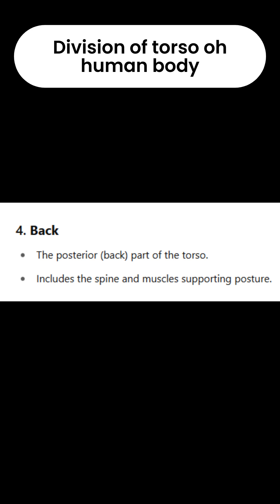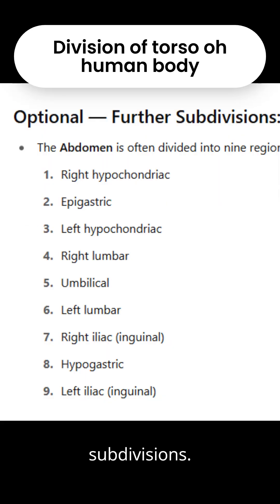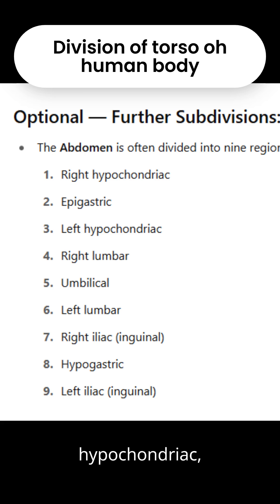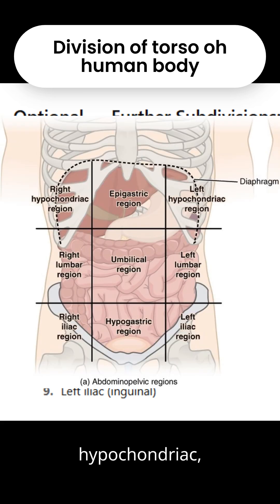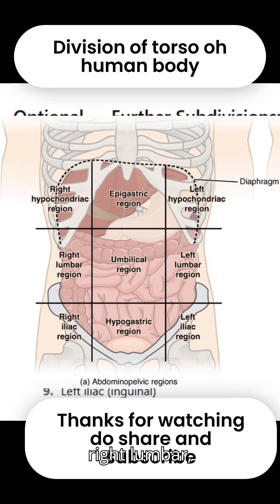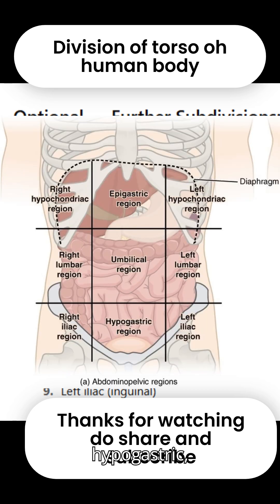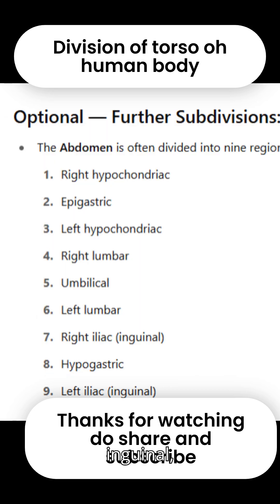Optional further subdivisions: The abdomen is often divided into nine regions for medical and anatomical purposes — right hypochondriac, epigastric, left hypochondriac, right lumbar, umbilical, left lumbar, right iliac inguinal, hypogastric, and left iliac inguinal.